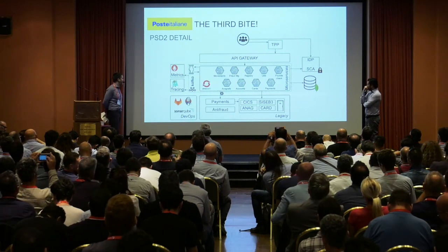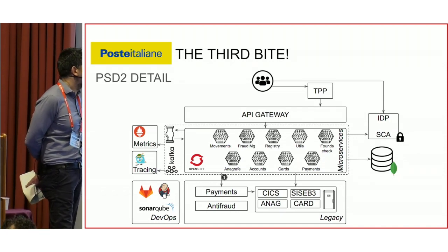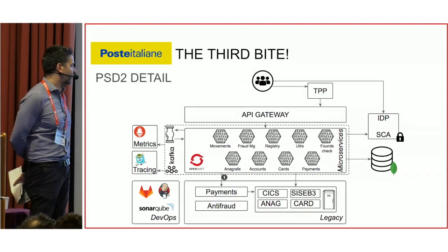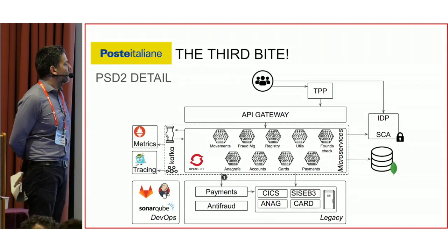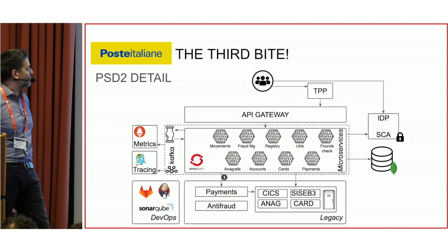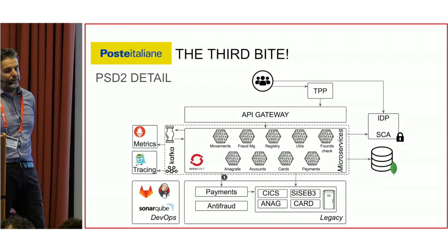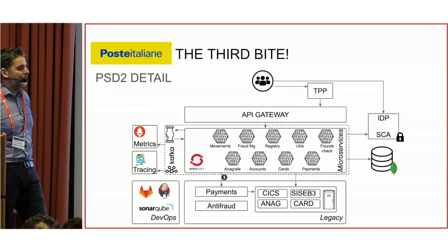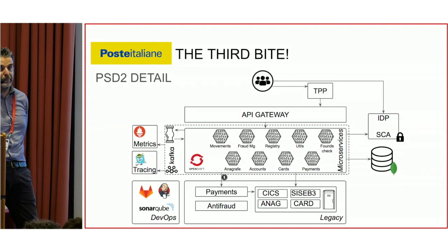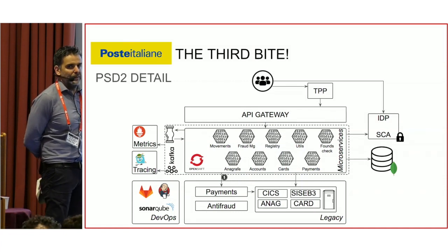This architecture is similar to the previous one. We have all microservices on OpenJDK and Spring Boot, with some interfaces to legacy systems for payment and to mainframe. The important thing about this platform is that we built it with the three pillars of observability — metrics, logging, and distributed tracing. We defined guidelines for our developers so they can build applications using standard OpenMetrics and OpenTracing, allowing us to avoid vendor lock-in.